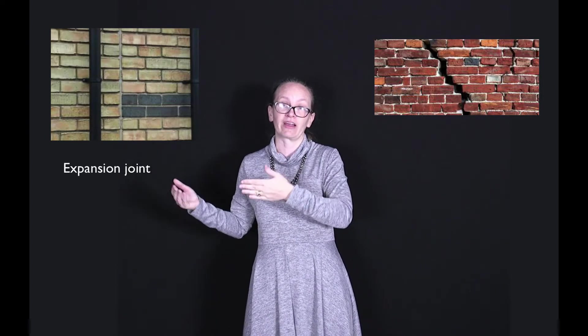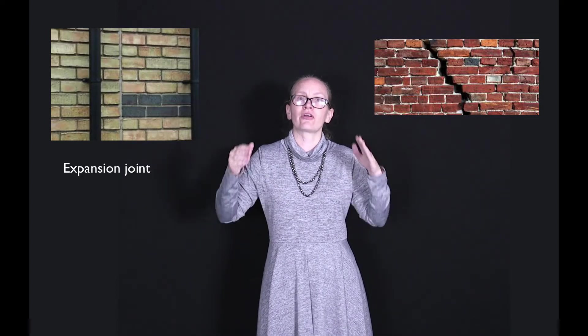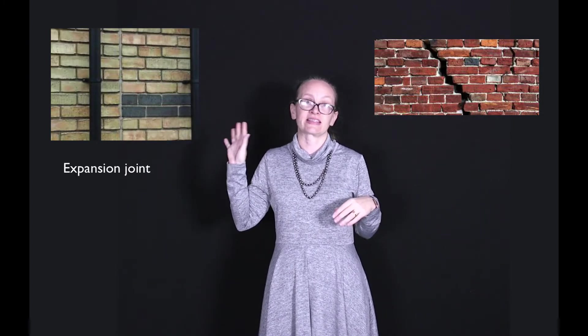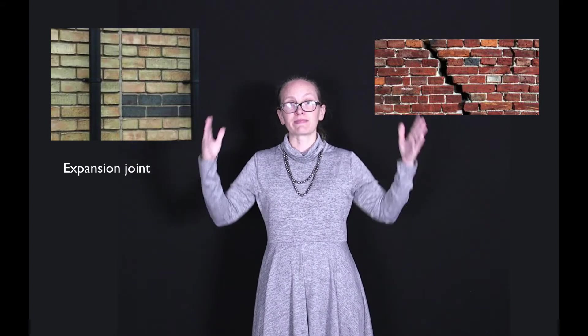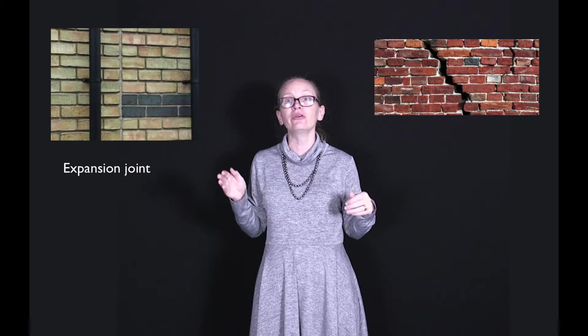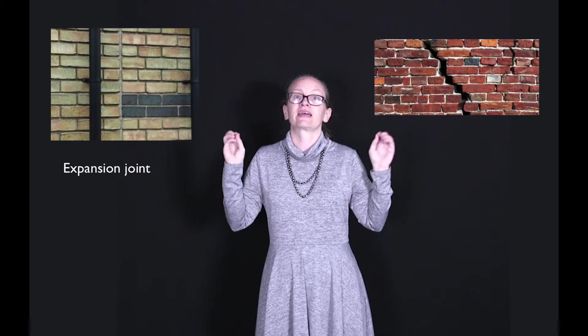You've possibly also seen this in buildings, especially in buildings built in climates with extreme temperature variations. These are known as expansion joints, and you may have seen them as a kind of line down the side of the building. As the building heats up, the bricks expand, and we need somewhere for this extra length to go so that the building doesn't crack.